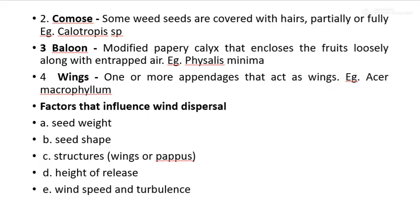Factors influencing weed dispersal by wind include seed weight — low weight seeds disperse more easily — seed shape, structure such as wings or pappus, height of release, and wind speed or turbulence. These factors are responsible for seed transfer from one place to another.